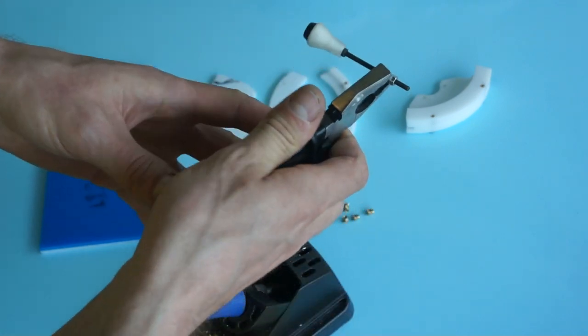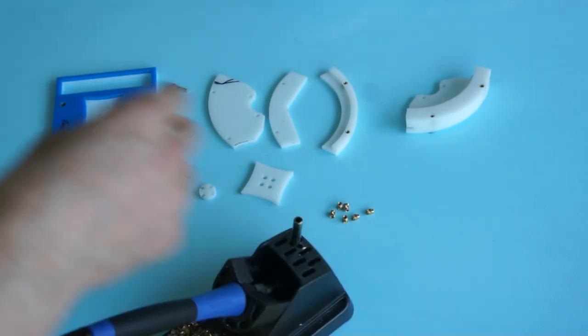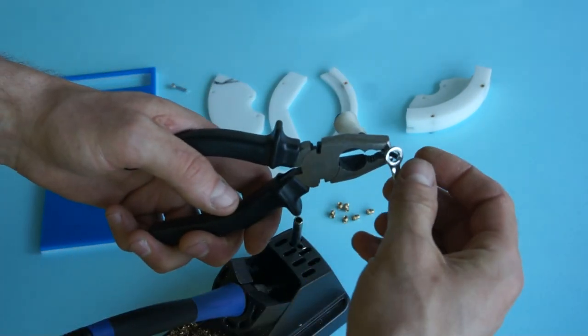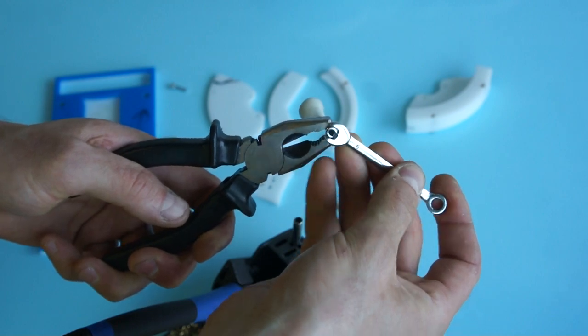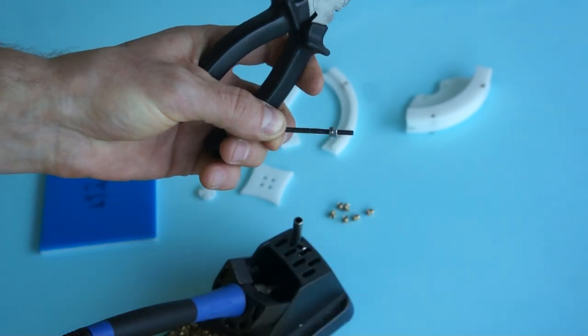I usually just use a set of pliers to just fix that. So now this won't move up and down when I lock it in place in the machine.